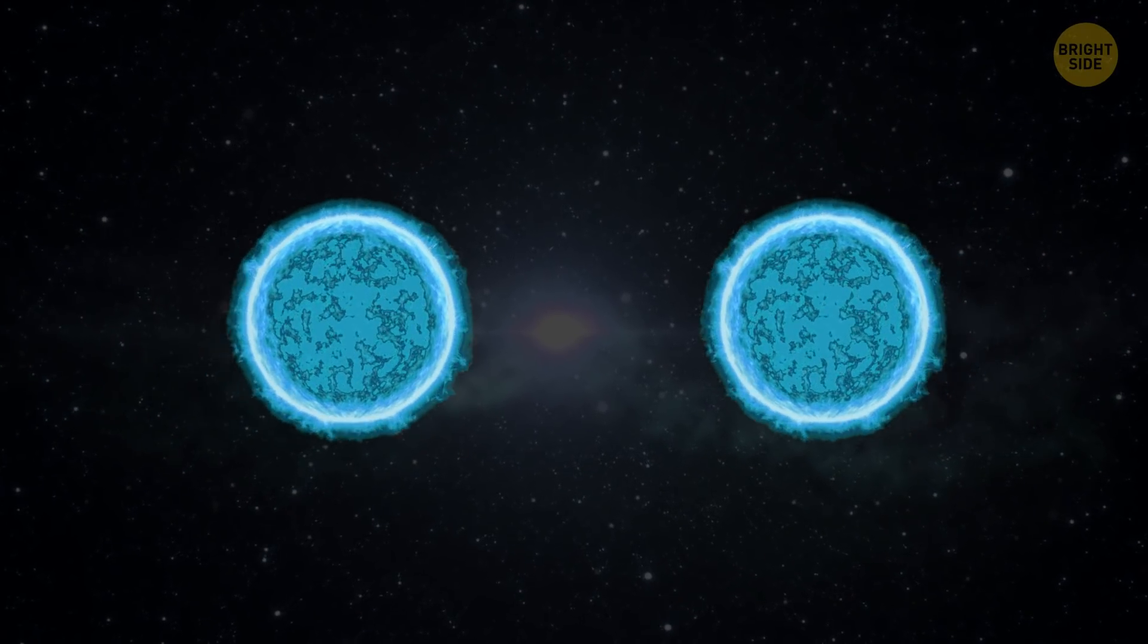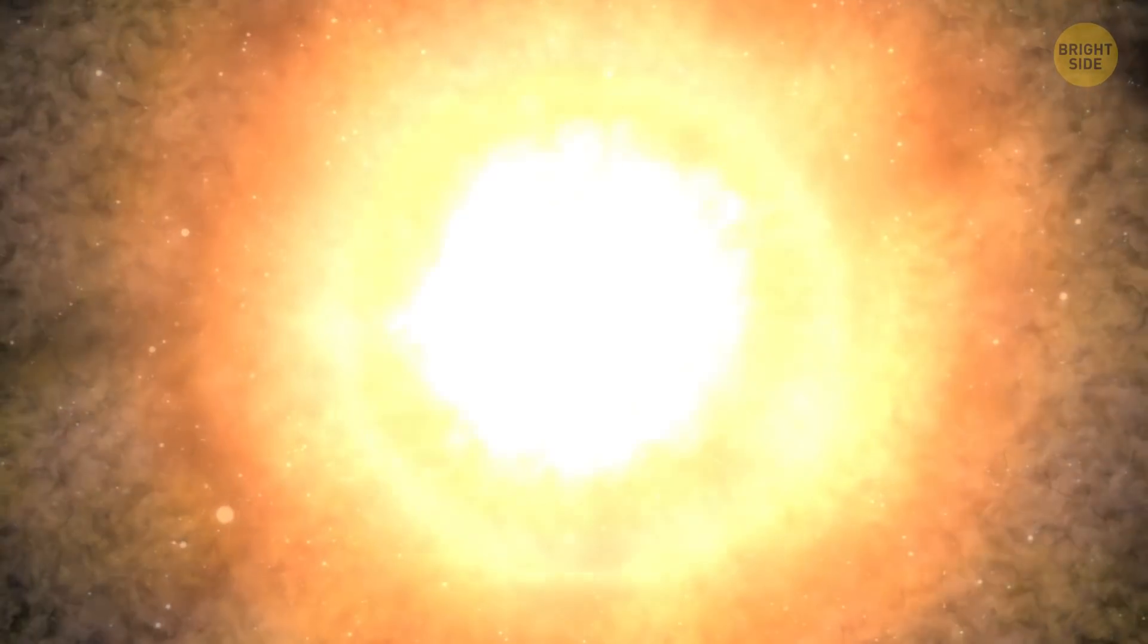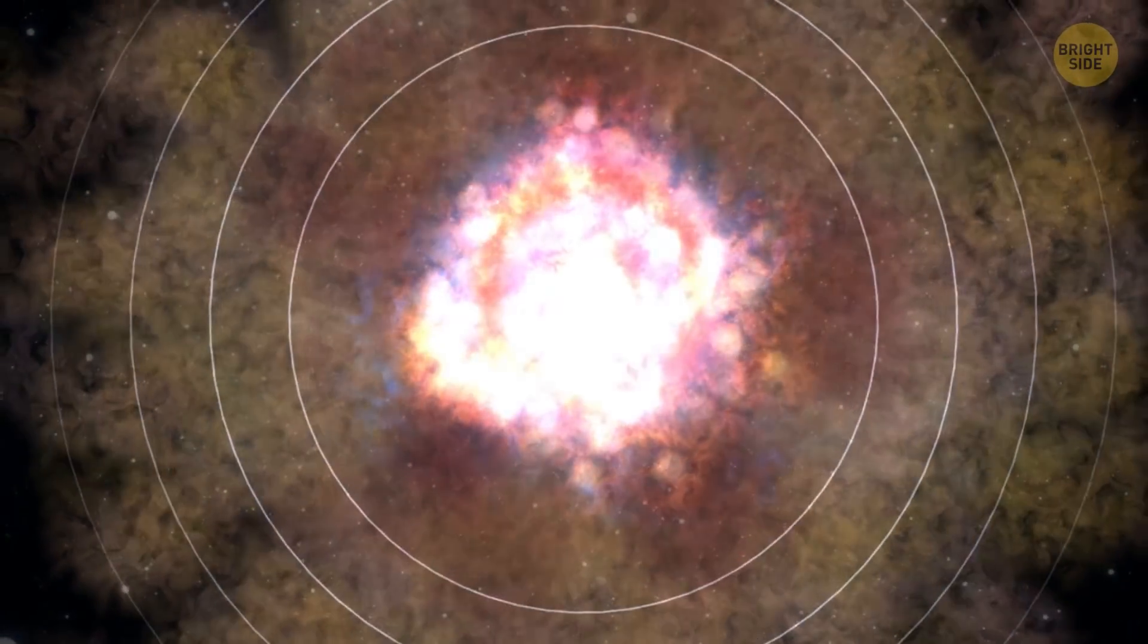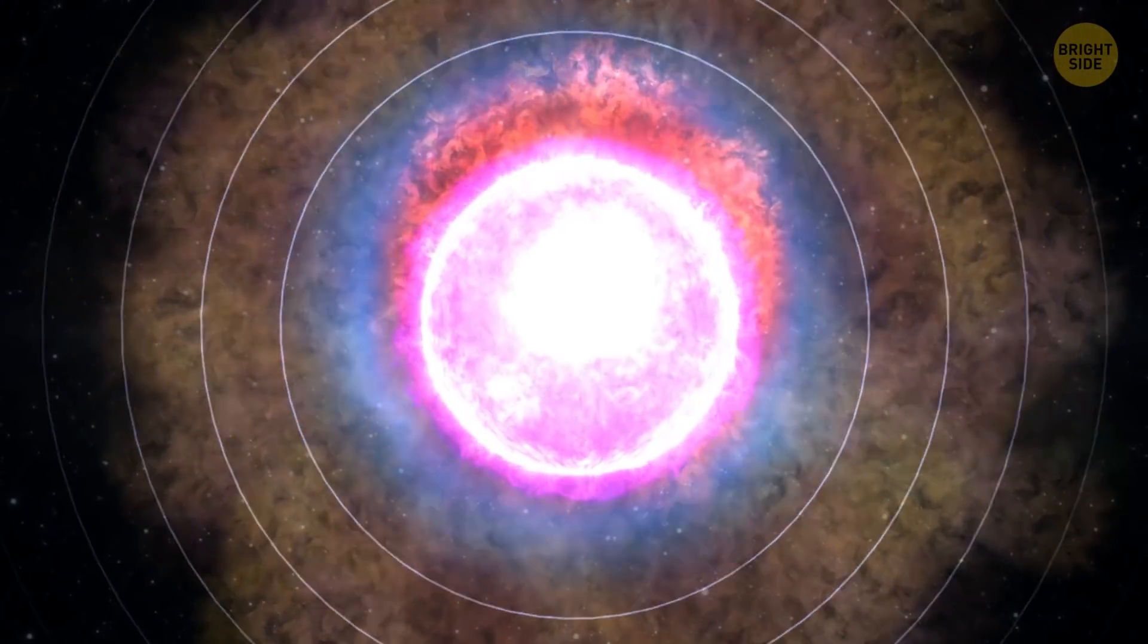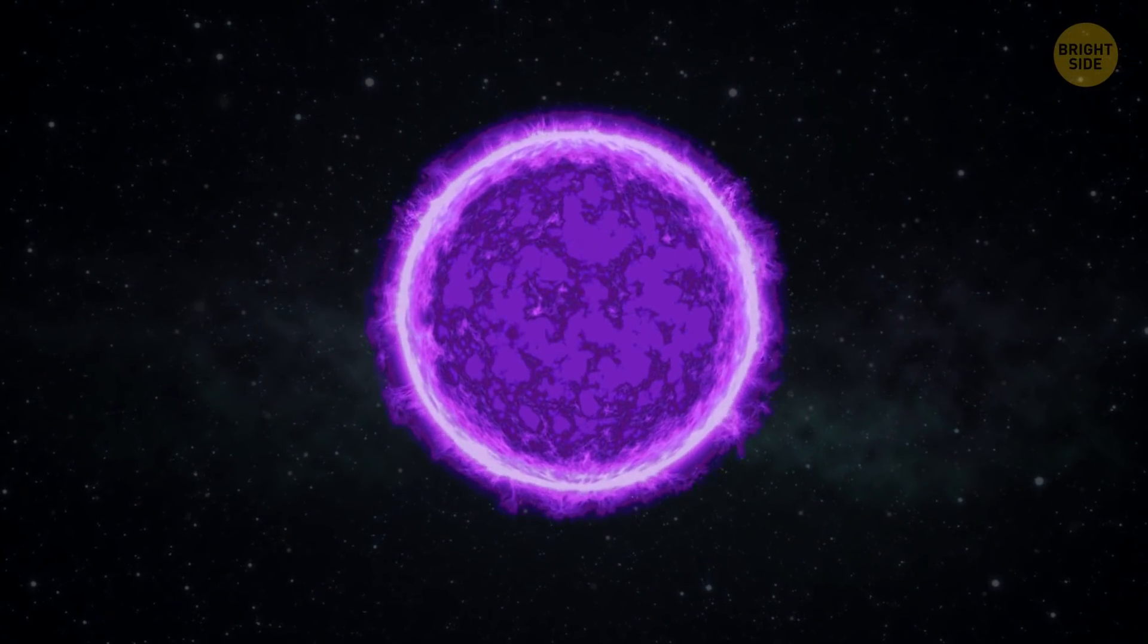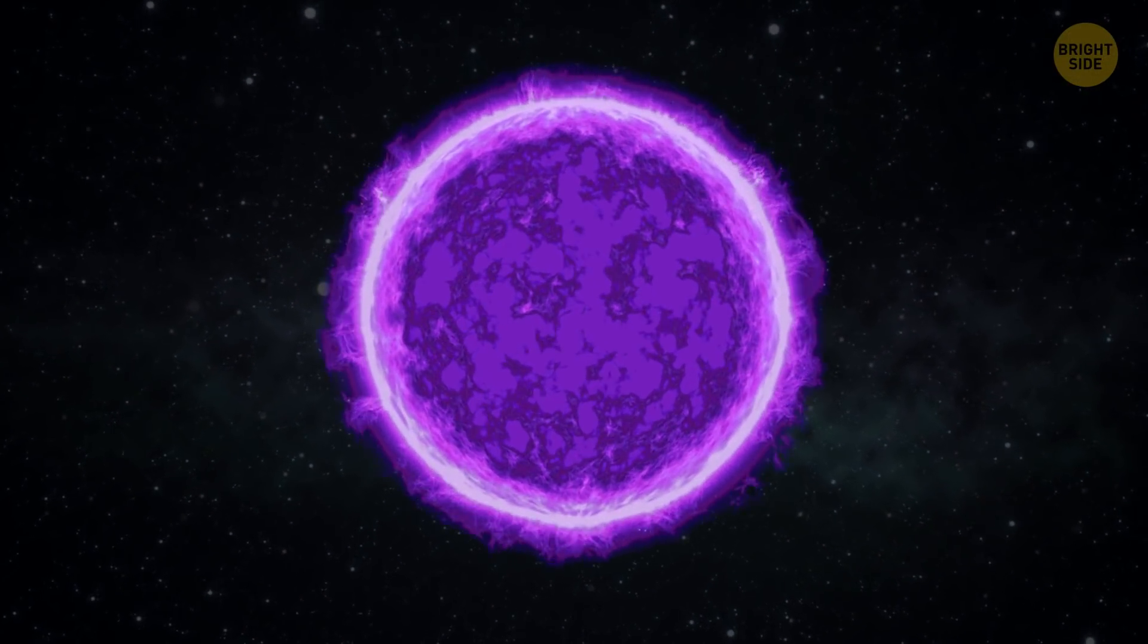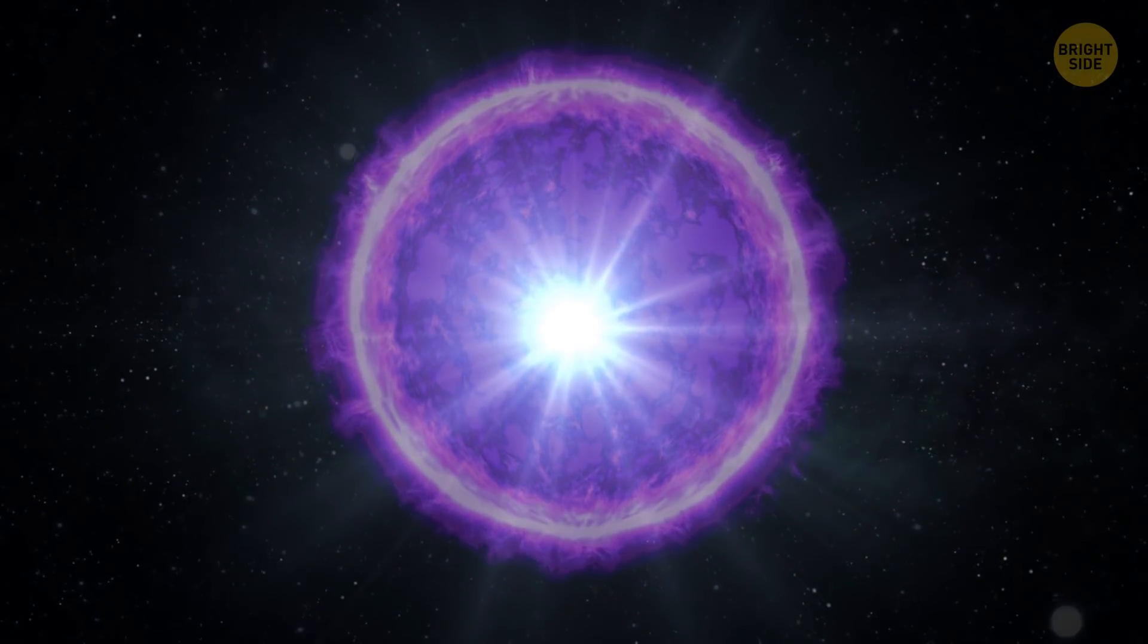Now, about that event I mentioned earlier. Scientists have recently observed a collision of two neutron stars. They were able to see this phenomenon thanks to the gravitational waves the crash created. Two small neutron stars collided with immense force and merged into one, larger star. The thing collapsed almost immediately after being born. But not before it provided astronomers with several much-needed answers.